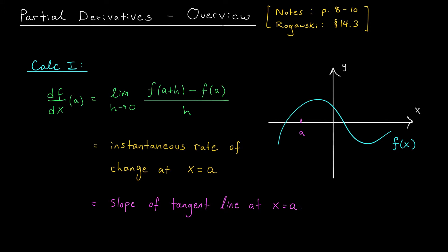To motivate this topic, think back to Calculus 1. There, a major part of your course was derivatives. The idea behind a derivative was you had some single variable function, y equals f of x, and at a point x equals a, you wanted some way to measure how quickly the function is growing or shrinking as you move away from a. One way to measure this rate of change is to look at a nearby point, a plus h, and then measure the slope of this line passing through the two corresponding points on our graph.